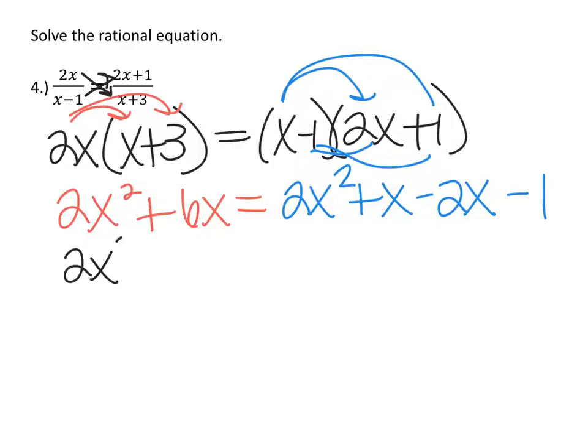On the left-hand side of the equal sign, I have 2x squared plus 6x equals. I'm going to combine like terms on the right. So I have 2x squared minus x minus 1.